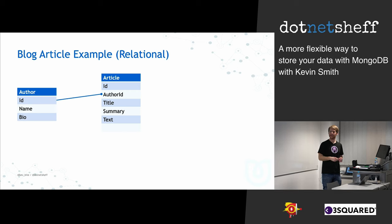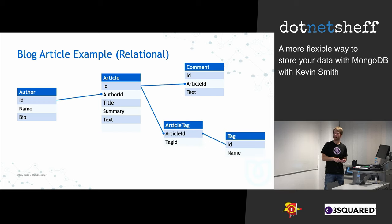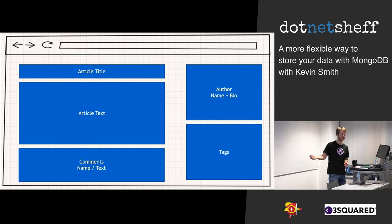Here's a little example of a blog article on a website — first a relational example, then how we'd model it in a document world. Normally we'd have an article table with an author join — a one-to-many relationship. We'd also have comments related to articles, and a tags table with a join table in the middle for reuse. When you think about a blog page, at the top you have your title and article text, comments at the bottom with name and text, the author on the right-hand side, and some tags at the bottom right.